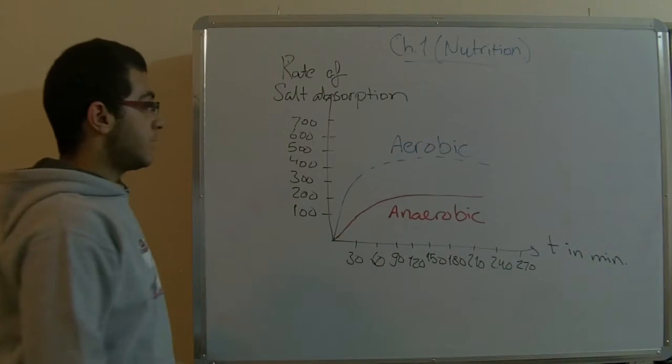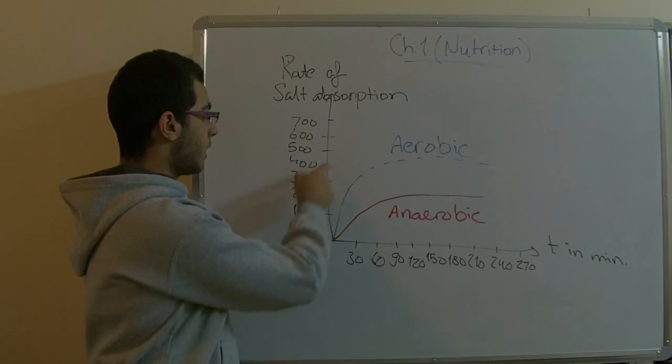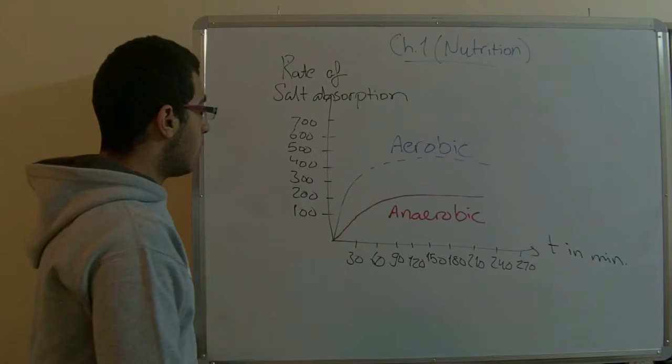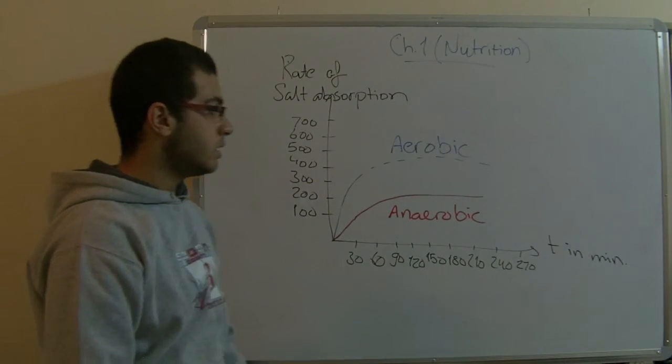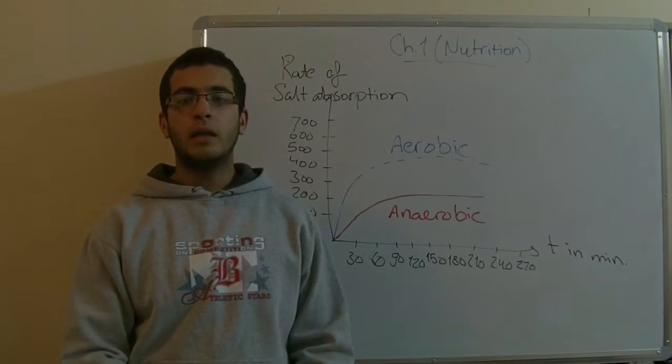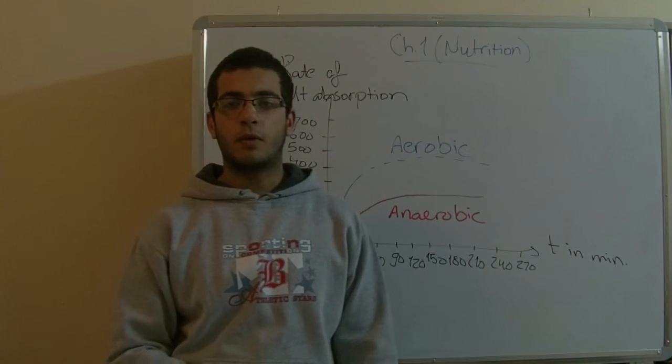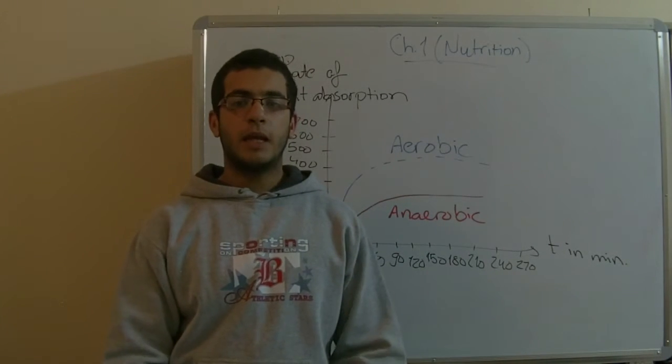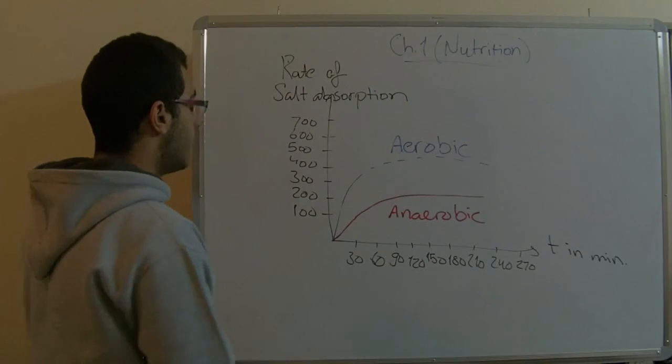So of course it's obvious that the rate of salt absorption increases in the presence of oxygen in the aerobic conditions, while it decreases in the anaerobic conditions. And this means that the active transport mainly depends on the energy produced from the plant, that depends mainly on oxygen. And this is the conclusion of our experiment.